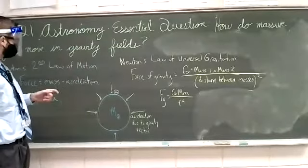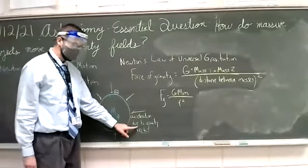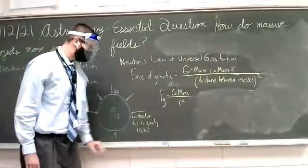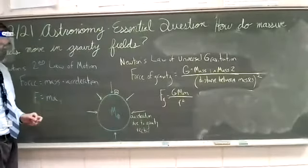And what we're going to do is calculate theoretically what is the acceleration due to gravity here on Earth. And to do that, we're going to combine Newton's law of universal gravitation and Newton's second law of motion.